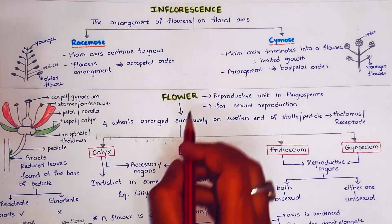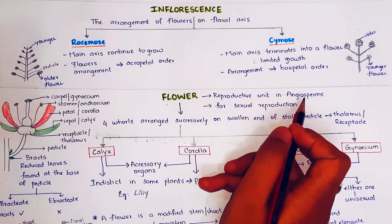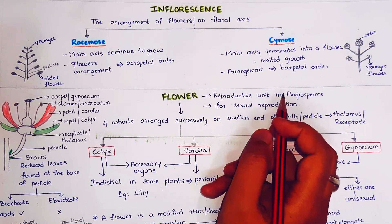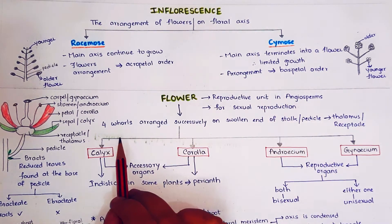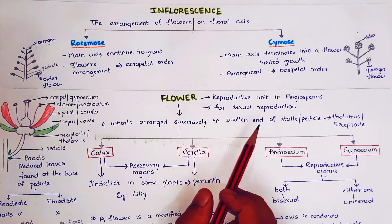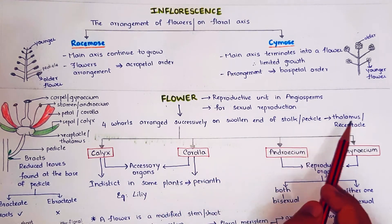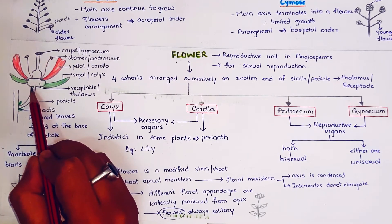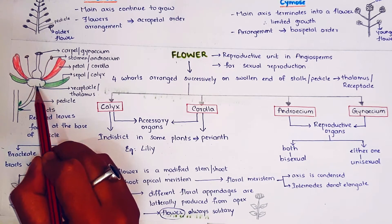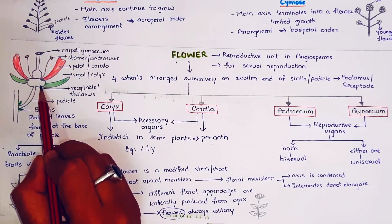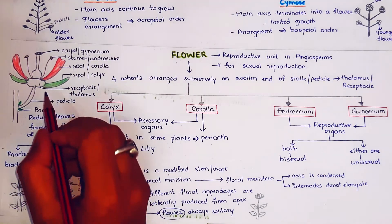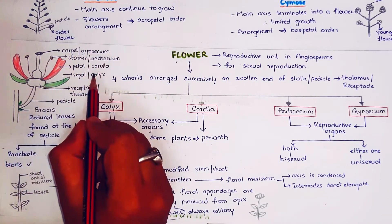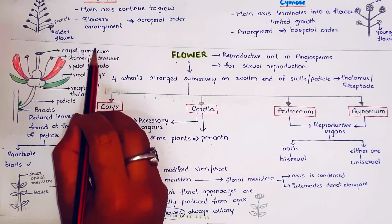Next, coming to flower. Flower is a reproductive unit in angiosperms — it is an organ for sexual reproduction in flowering plants. Flower has four whorls arranged successively on the swollen end of the stalk or pedicel, called thalamus or receptacle. You can see here: this is a stalk or pedicel on which a swollen structure is present. This swollen end is called thalamus or receptacle. The floral appendages are arranged on this thalamus in the form of four whorls: calyx, corolla, androecium, and gynoecium.